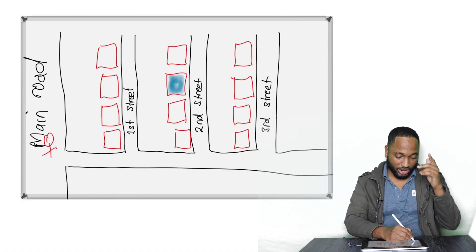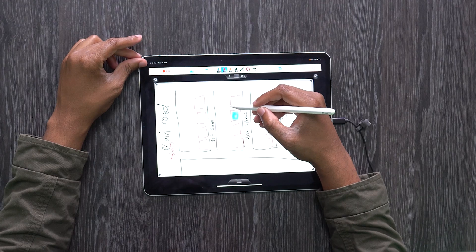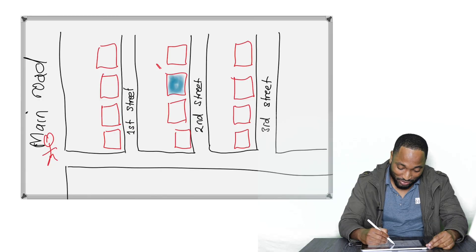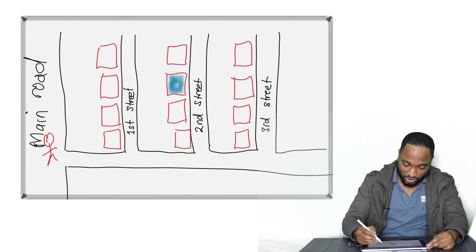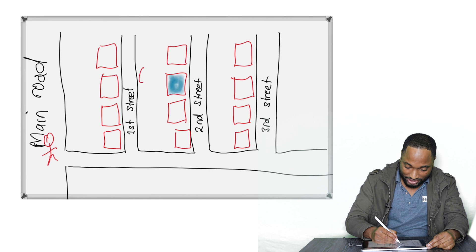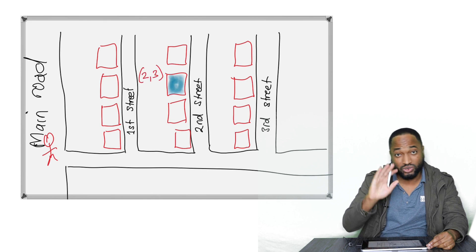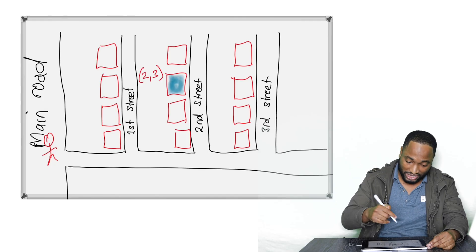If I am on the main road here and I want to go to my friend's house over here, the blue house, I would need to go down to the second street and the third house. So if I write that in brackets, that would be like the second street, the third house. Coordinates work just like this. Or if I want to go to the green house up here, that's the third street and the fourth house.